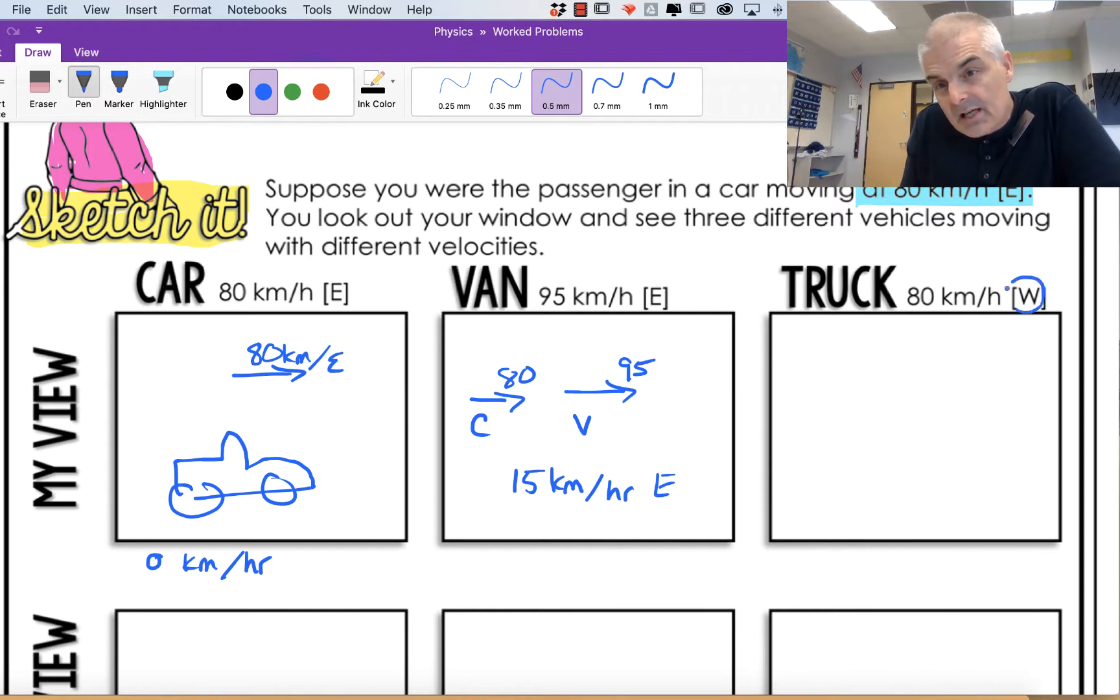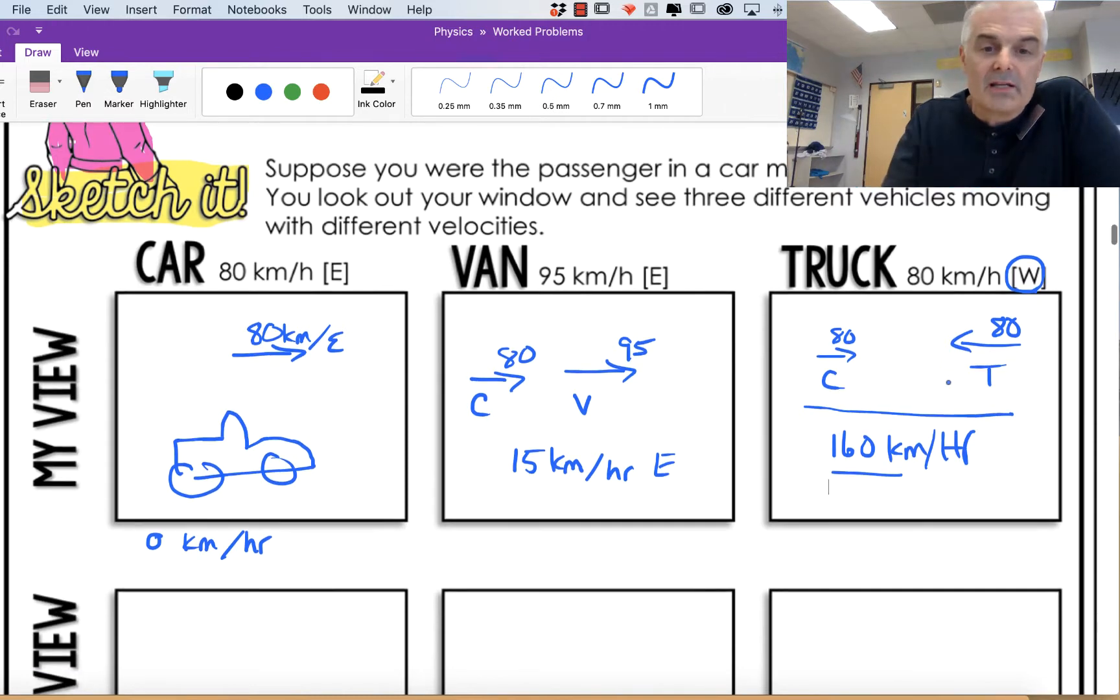But what about a truck? Now the truck, notice he is headed west. Your car is going at 80 and the truck is going at 80, but in the opposite direction. What is the speed that it seems like you're traveling? From your perspective, the truck is moving at 160 kilometers per hour. You see, we're adding the numbers. Think about this. If you're going to have a collision, the worst is a head-on collision. Why? Because the actual speeds, 80 and 80, add up to 160.